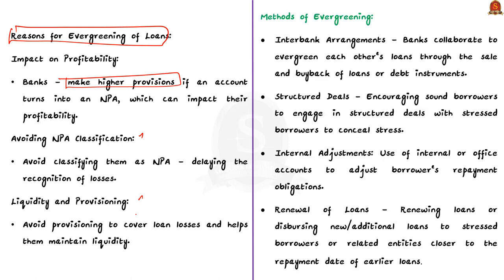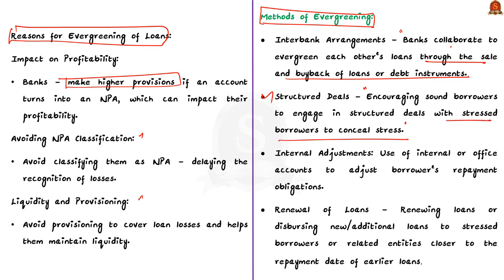Now let us see the methods of evergreening. Firstly, inter-bank arrangements — banks collaborate to evergreen each other's loans through sale and buyback of loans or debt instruments. Secondly, structured deals — encouraging sound borrowers to engage in structured deals with stressed borrowers to conceal the stress. Thirdly, internal adjustments — using internal or office accounts to adjust the borrower's repayment obligations. Fourthly, renewal of loans — renewing or dispersing new or additional loans to stressed borrowers or related entities close to the repayment date of earlier loans.